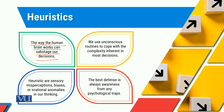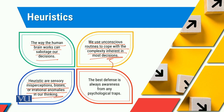Humein yeh dekhna padhega ke hamara zihin kis tarha se hamare faislon ko effect aur impact kar sakta hai. Because zihin mein hone wale bohut se khayalat, hamara cognitive part, humara belief system, humari value system — yeh tamam cheezein hamare decision making ko effect aur impact kar rahi hongi. We use unconscious routines to cope with the complexity inherent in most decisions. Aur isi maksad ke liye hum logon ko mindfulness exercises ki taraf jana hai, apne psychodynamic developments ko visualize karna hai, taake hum apne unconscious mind processes ko control aur conscious mind processes ko trigger kar sakein. Remember that heuristics are sensory misperceptions, biases and irrational anomalies in our thinking, jaisa ke humari selective perception.